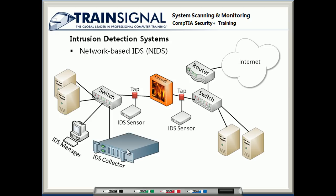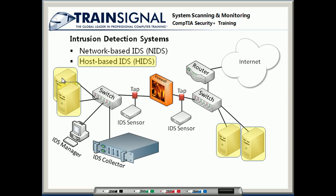If you want to get really granular and very specific about protecting some of your critical endpoints, you would then put a host-based intrusion detection system on those particular endpoints. So you may have an email server, a file and print server, and a web server. Each of these different devices may get attacked differently because of the way those servers function. By putting a host-based intrusion detection system on those endpoints, you can customize the way that IDS works on that device to protect it from those particular types of attacks.